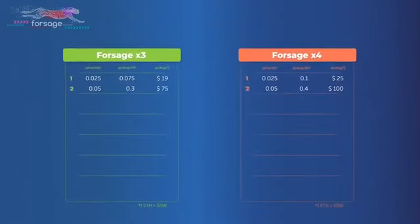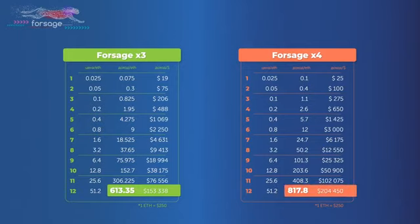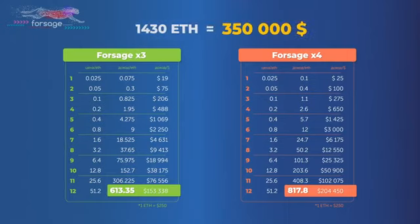If you move this way one slot a week, then in 12 weeks you will go to the 12th slot and your full income will be 613.35 with X3 and 817.8 Ethereum with X4. Total 1430 Ethereum. At the rate of $250 this is more than $350,000. And then you no longer need upgrades. All slots are activated and endlessly through a circle of reinvest bring your income.